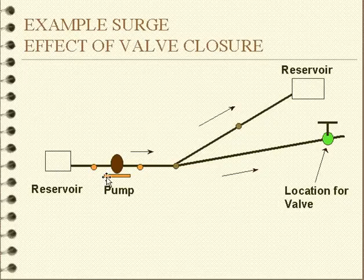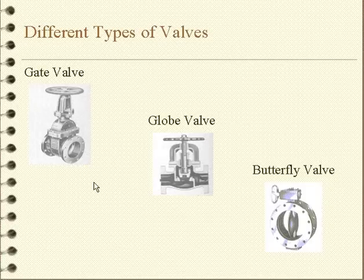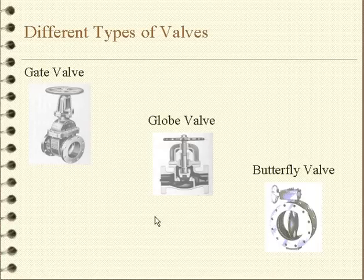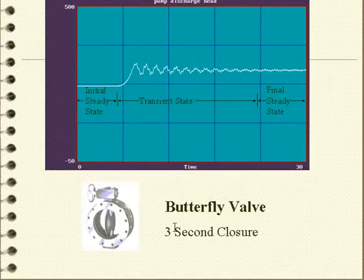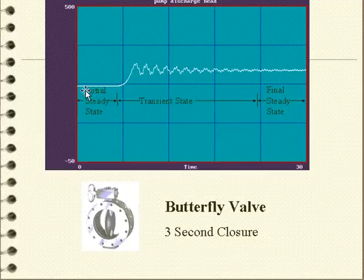We're pumping from a reservoir to an elevated reservoir and through a valve, and we're going to shut down this valve. The response will depend on the type of valve, because the area of the valve differs as the valve stem closes — you'll have a different response between, say, a globe valve and a butterfly valve. The first illustration shows what happens when we close a butterfly valve in three seconds: we have an initial steady state, the valve closes, we get a period of transient operation, and a final steady state.